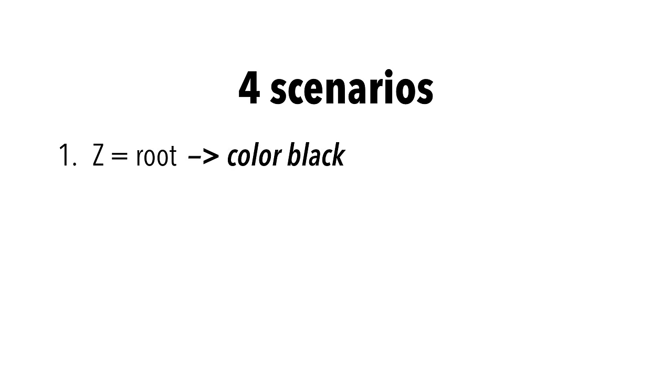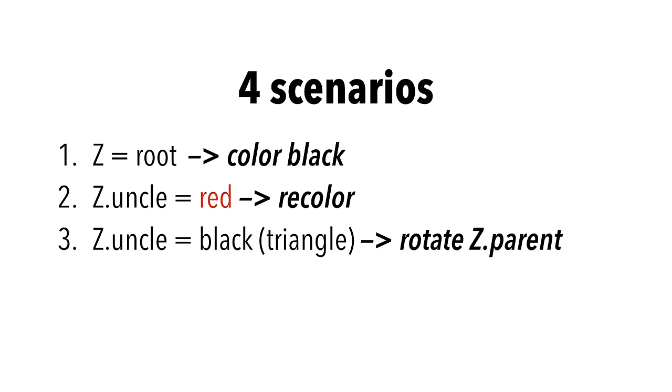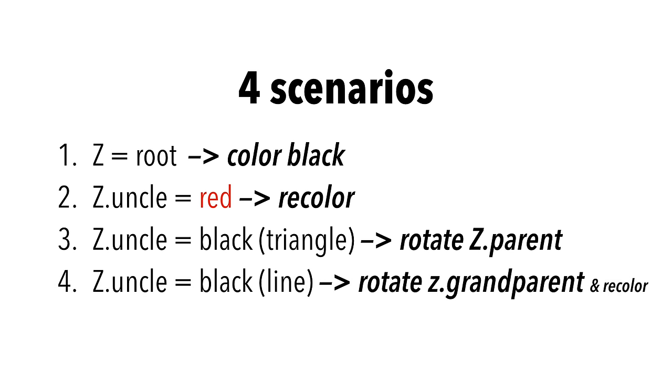First, when Z is the root, we color it black. Second, when Z's uncle is red, we recolor Z's parent, grandparent, and uncle. When Z's uncle is black and a triangle is formed, we rotate Z's parent. And when Z's uncle is black and a line is formed, we rotate Z's grandparent and do some recoloring.